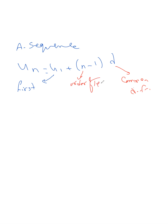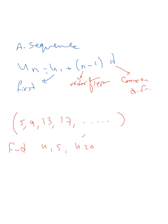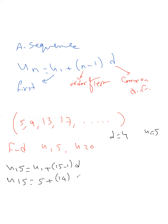For example, if the sequence is 5, 9, 13, 17, and so on, find u_15 and u_20. Using the formula, u_15 equals u_1 plus 15 minus 1 times d. The difference d is 4 and u_1 is 5, so u_15 equals 5 plus 14 times 4, which is 5 plus 56 equals 61. And u_20 will be 5 plus 19 times 4.